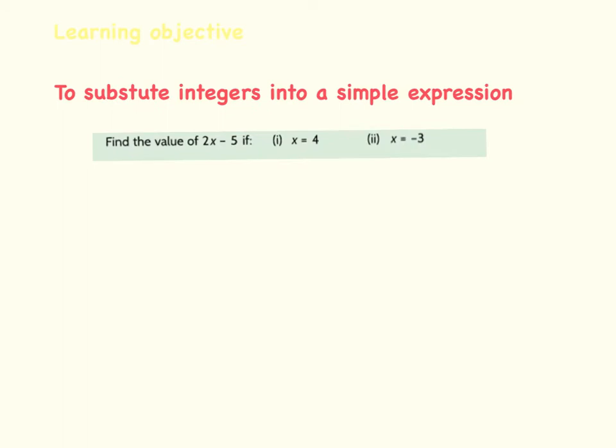Example 1 here today is find the value of 2x minus 5 if, in the first instance, x is equal to 4. So the expression I've been given is 2x minus 5 and I've been told x equals 4. So I'm going to write that in the corner here.